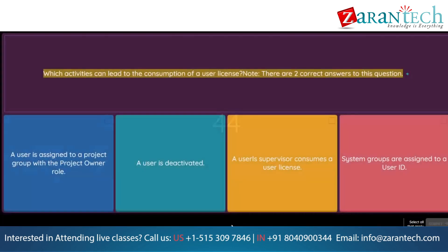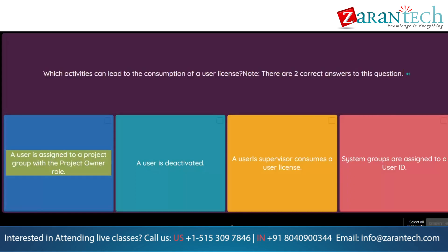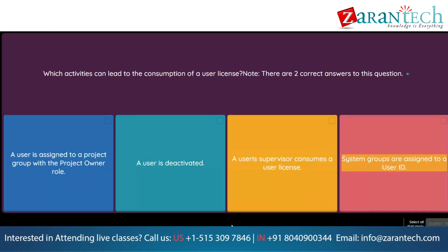Question: Which activities can lead to the consumption of a user license? Note: there are two correct answers. Option 1: A user is assigned to a project group with the project owner role. Option 2: A user is deactivated. Option 3: A user's supervisor consumes a user license. Option 4: System groups are assigned to a user ID.